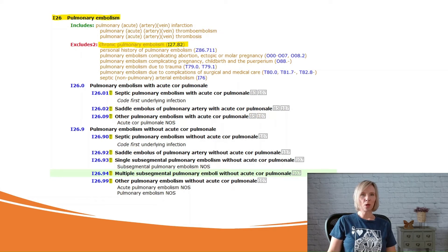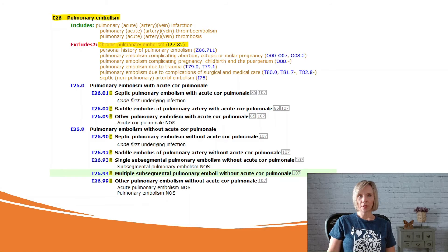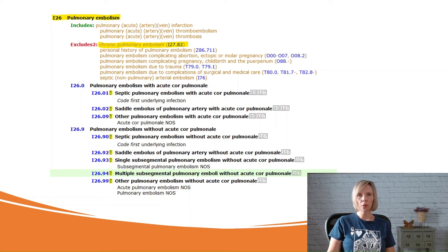Starting with the code found in the index for multiple subsegmental PEs without cor pulmonale — I2694 — we can see that for Category I26, Pulmonary Embolism, there is an EXCLUDES-2 note indicating that chronic pulmonary embolism is an EXCLUDES-2 condition for all of the types of pulmonary embolisms found in the category. This EXCLUDES-2 note lets us know that both codes are needed to fully describe the patient's condition, and that it is acceptable to use both codes when the documentation supports it.